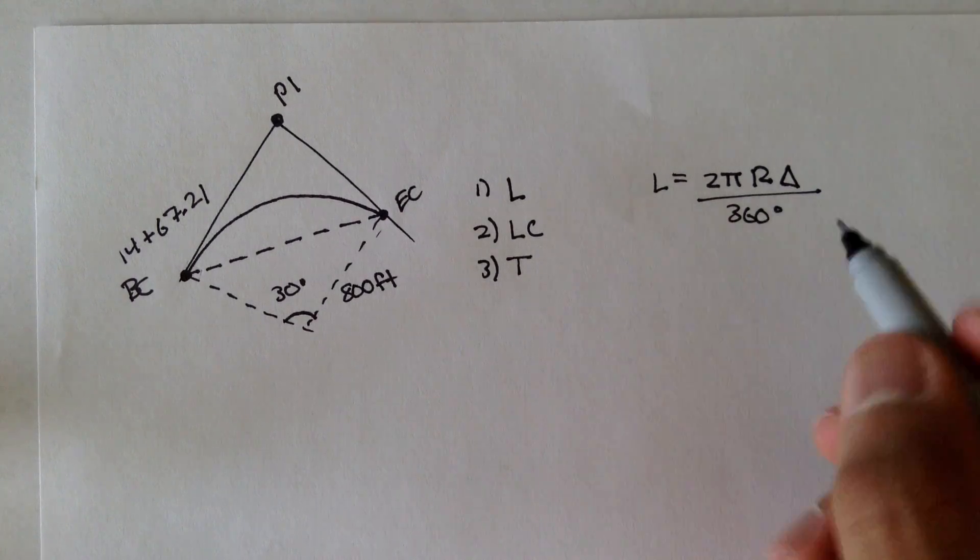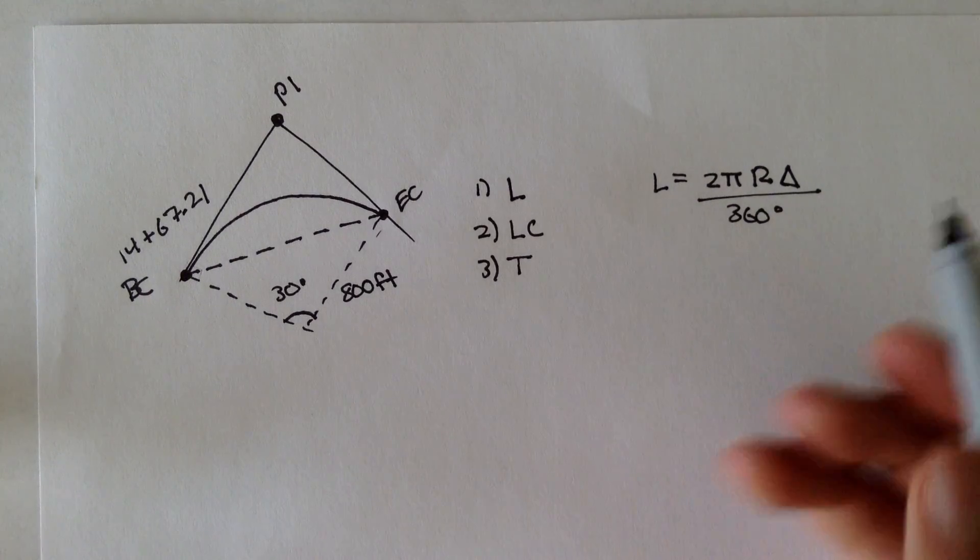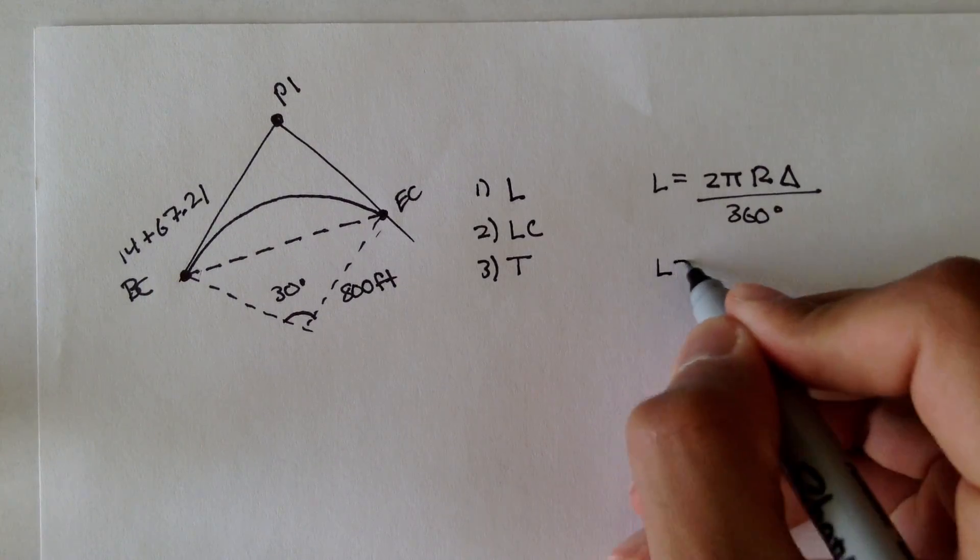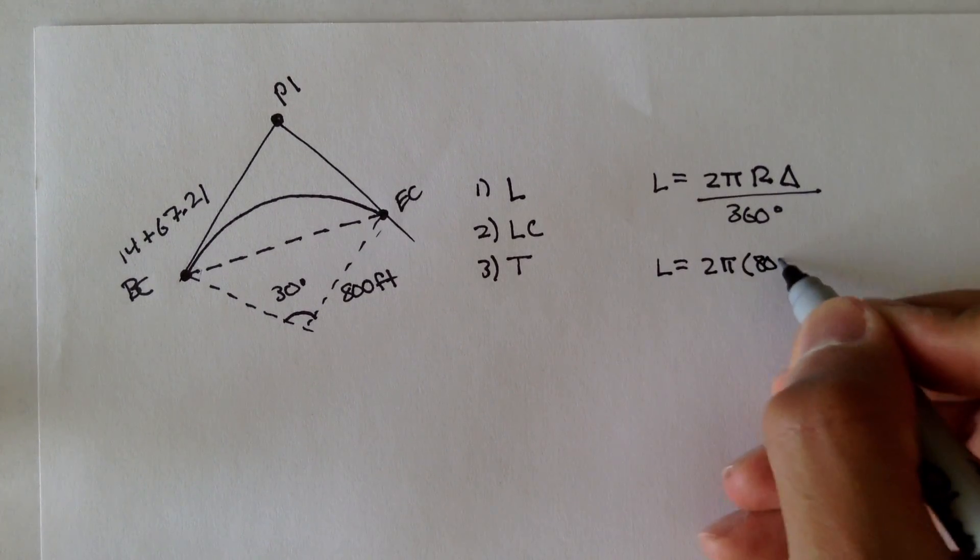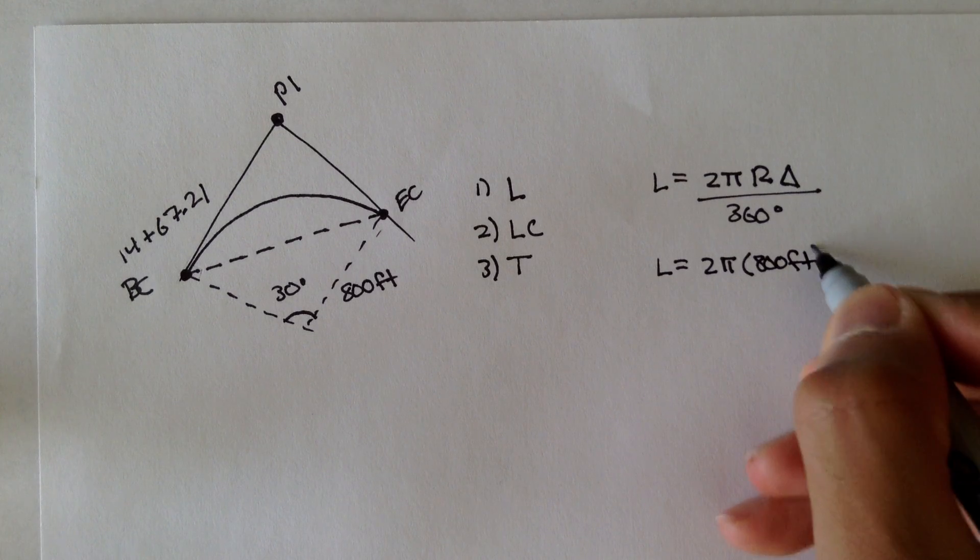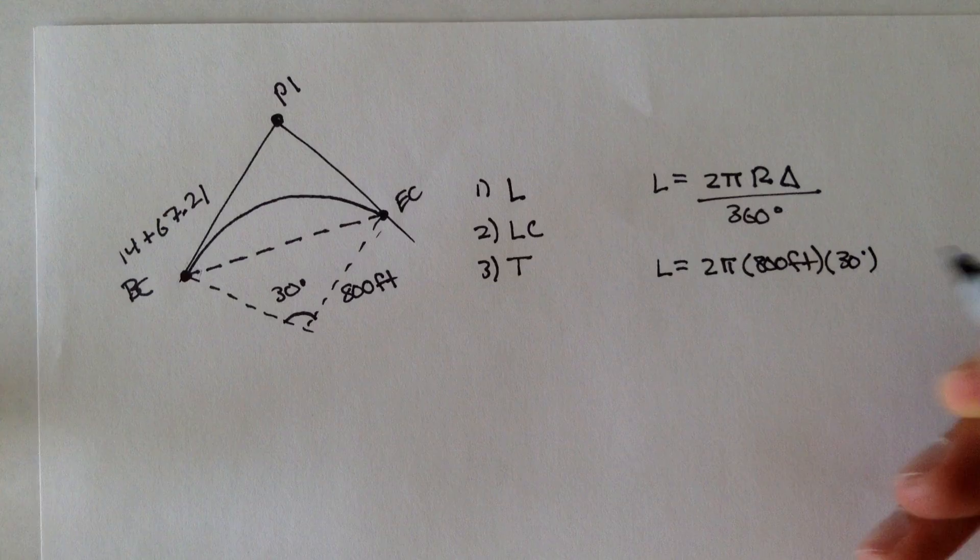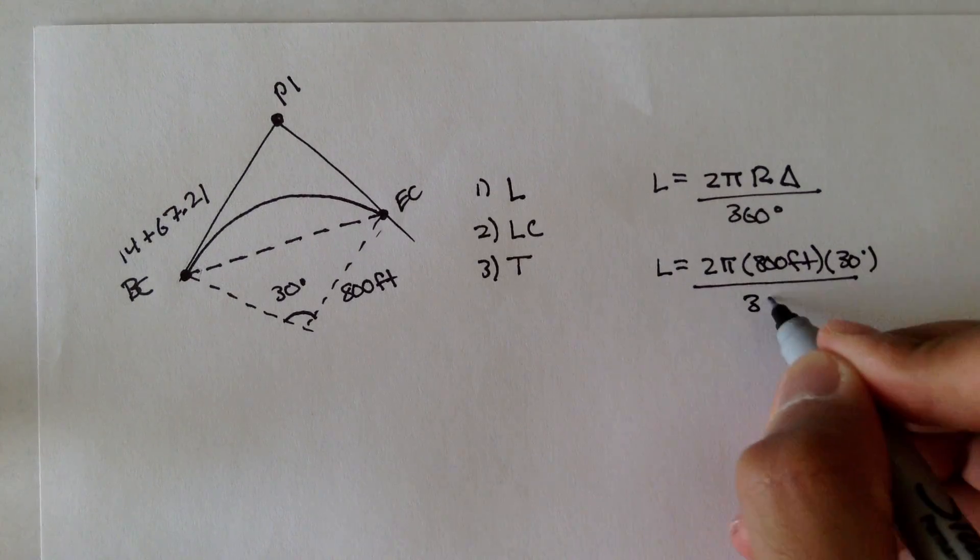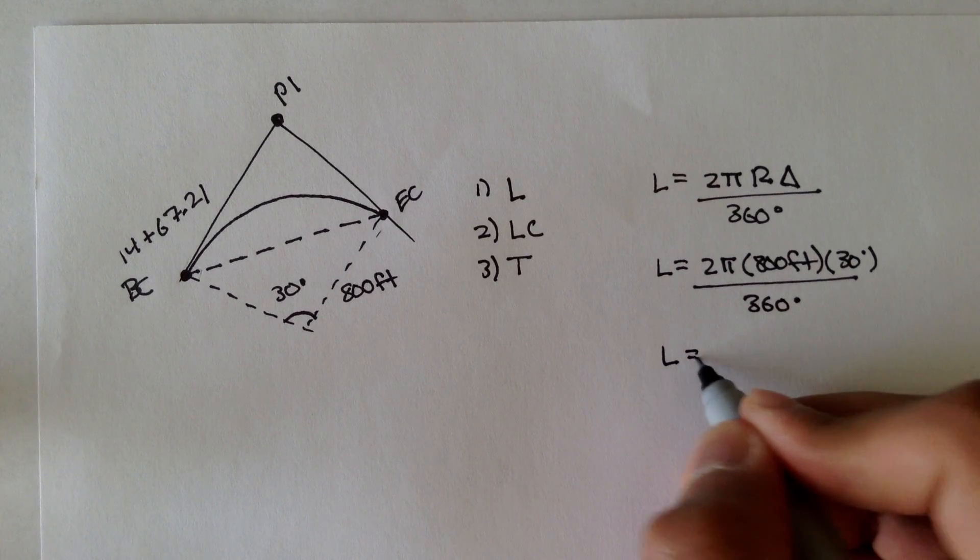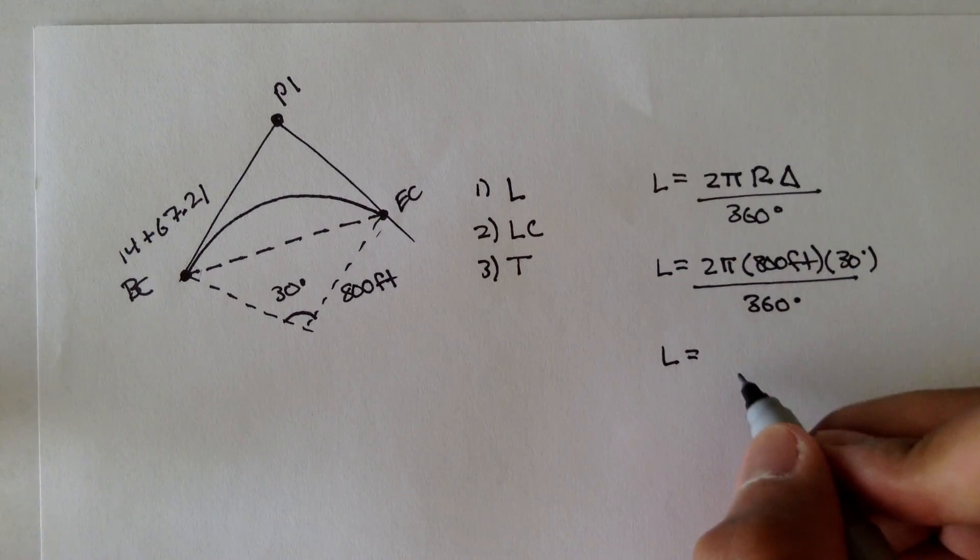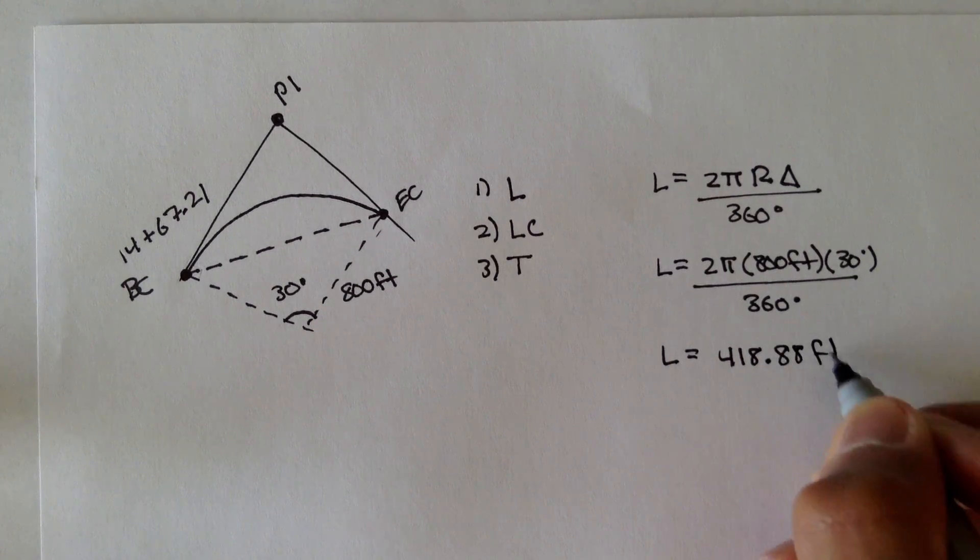So if we just plug in the radius and the interior angle, which we have, 30 degrees, let's plug it in, 2 pi times the radius, radius is 800 feet. And then, the interior angle is 30 degrees. Divide that by 360 degrees. And if you solve all this out, you should get the length, the length of this horizontal curve is 418.88 feet.